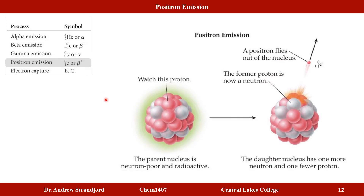Positron emission occurs when a parent nucleus has too few neutrons to be stable. It converts one of its protons into a neutron by emitting a positron, which is the opposite of an electron. In the process, the atom now has one fewer proton and more neutrons, changing its chemical identity and making it more stable.